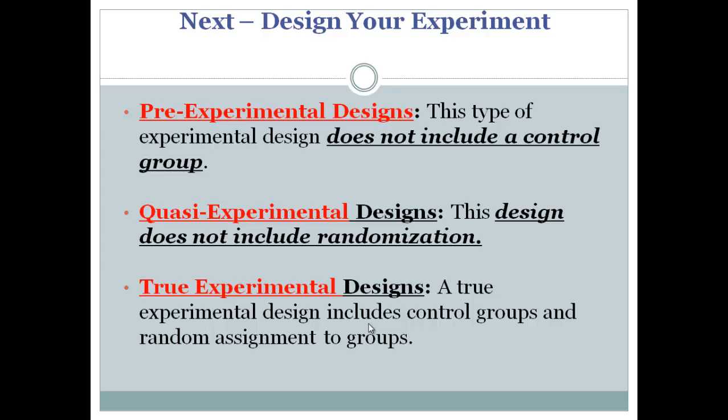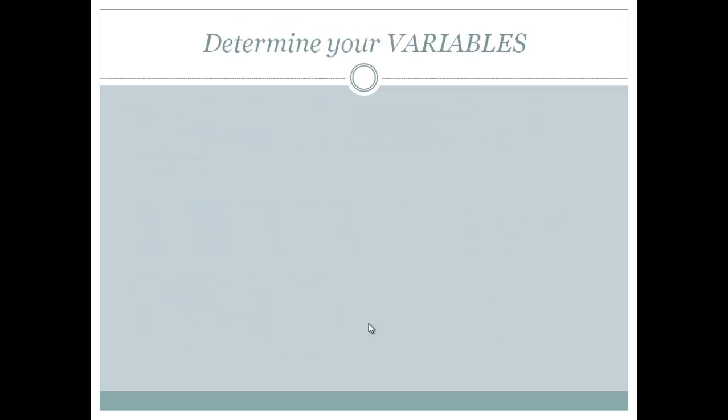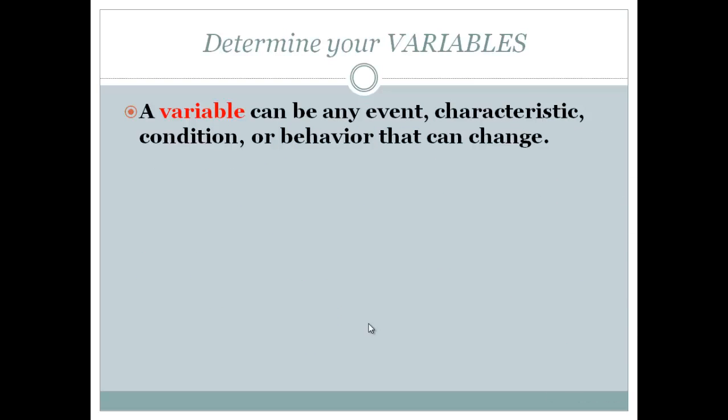So we've got a research question. We kind of decided how we're going to design our experiment. Now we have to determine our variables. Now this is a very important term to know for the AP test and my test. So make sure if you have to stop or take down some notes or jot down some questions, here you do.